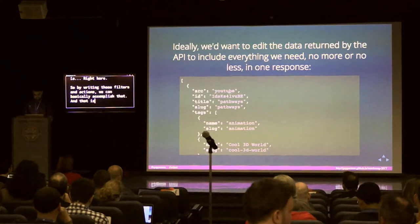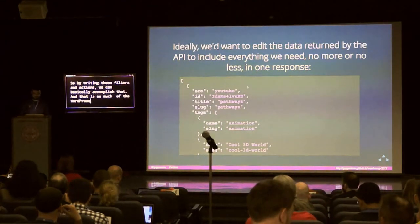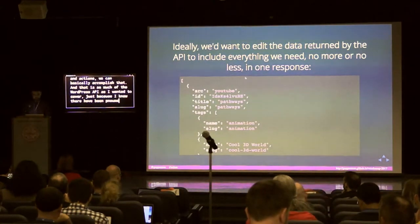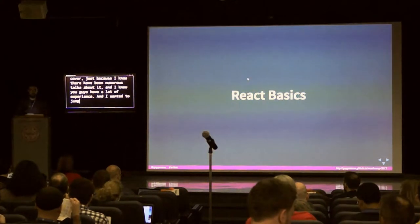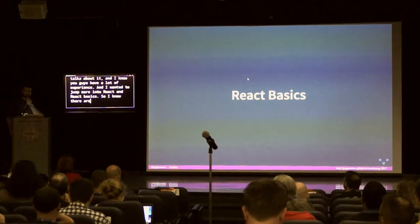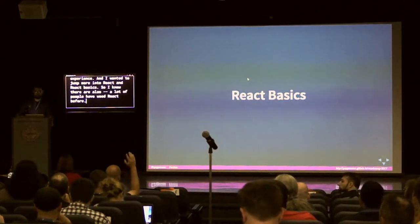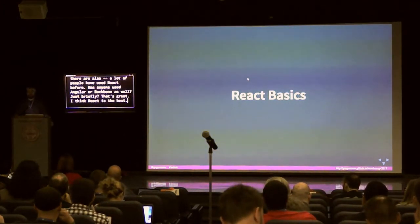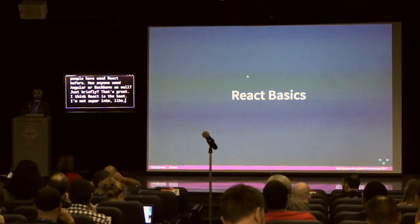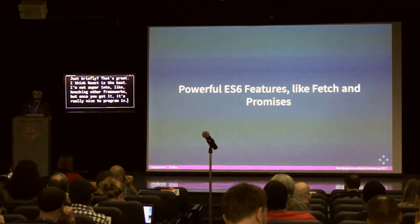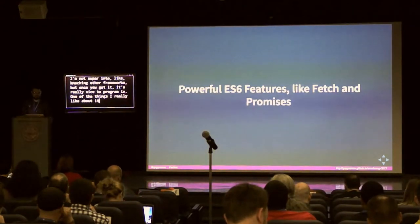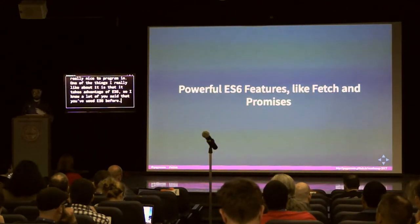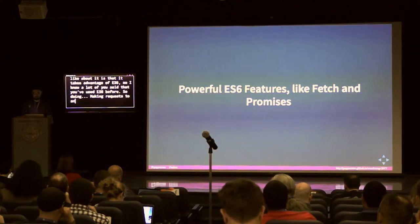That's as much of the WordPress API as I wanted to cover — I know there have been numerous talks about it and you have a lot of experience. I wanted to jump more into React basics. One of the things I really like about React is that it takes advantage of ES6. Making requests to an API is very easy using fetch and promises — it handles asynchronous requests really well. There are also nice ES6 features like template literals and string interpolation, and you can stop typing semicolons.